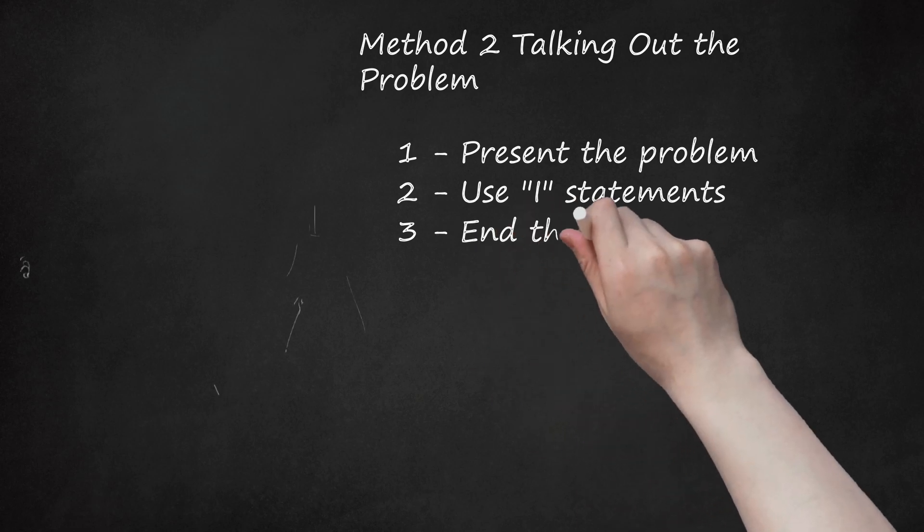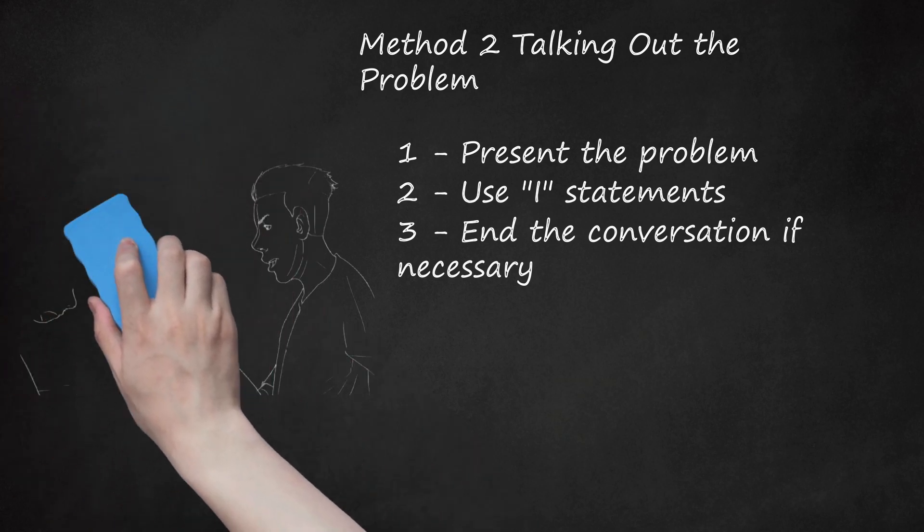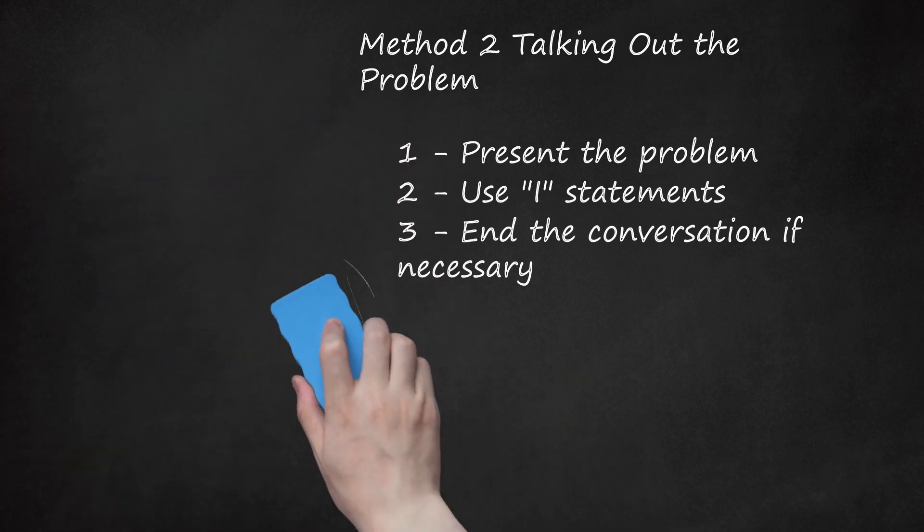3. End The Conversation If Necessary. Sometimes, even if you talk as respectfully as possible your sibling will just not stop talking. She may even become hostile, despite your best efforts to resolve the situation. If your sibling keeps talking over you and disrespecting you, it's best to simply end the conversation. Say something like, 'I don't think we're getting anywhere and I don't feel comfortable right now.' Then, leave the conversation.